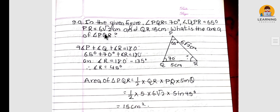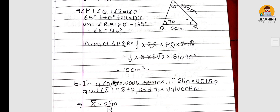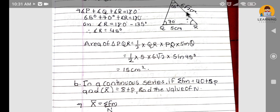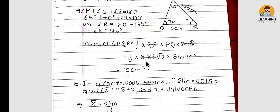In the given figure, angle PQR = 70°, angle QPR = 65°, PR = 6√2 cm, and QR = 5 cm. Find the area of triangle PQR. The third angle = 180° − 70° − 65° = 45°. Area = (1/2) × QR × PR × sin(45°) = (1/2) × 5 × 6√2 × sin 45° = 15 cm².